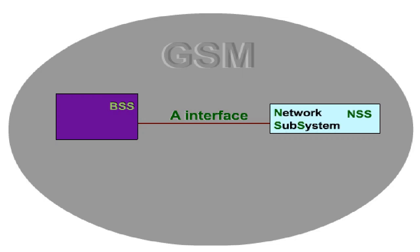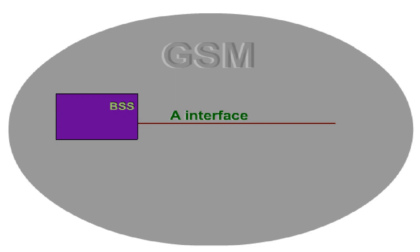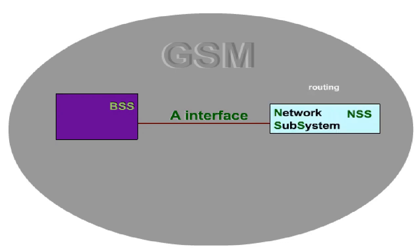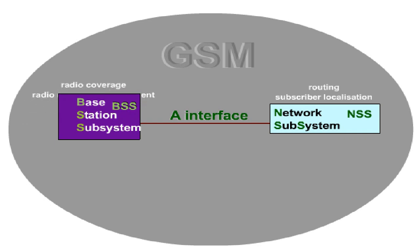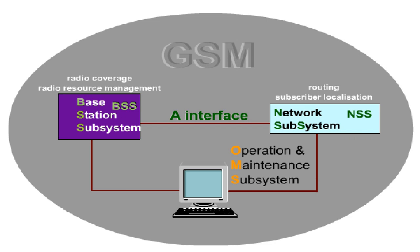Apart from the network subsystem for routing and subscriber localization, and the base station subsystem, BSS, for radio coverage and radio resource management, there is also the operation and maintenance subsystem, OMS, which guarantees network management and administration.